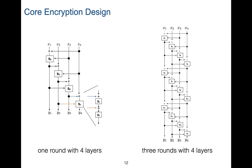For three rounds with four layers, we have the same round structure repeating three times, except that none of the S-boxes used in the first round will be the same in the second round. They are different S-boxes, picked via AES computation in the index sequence generation.